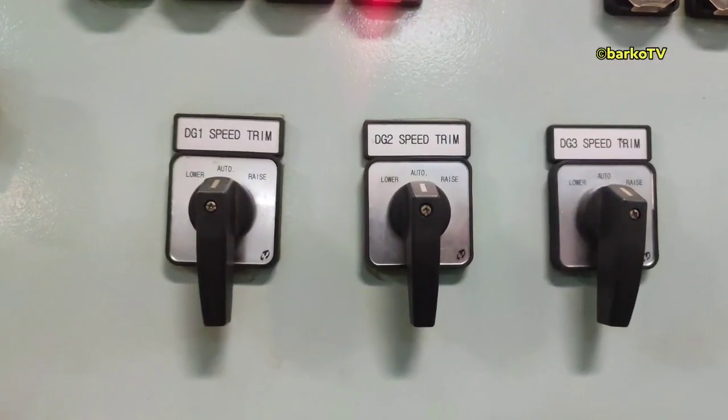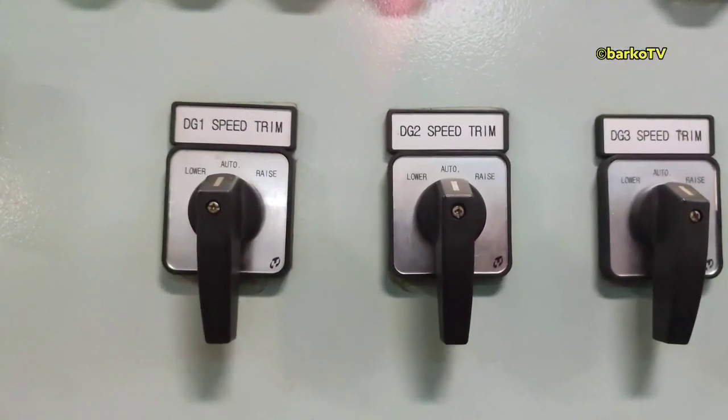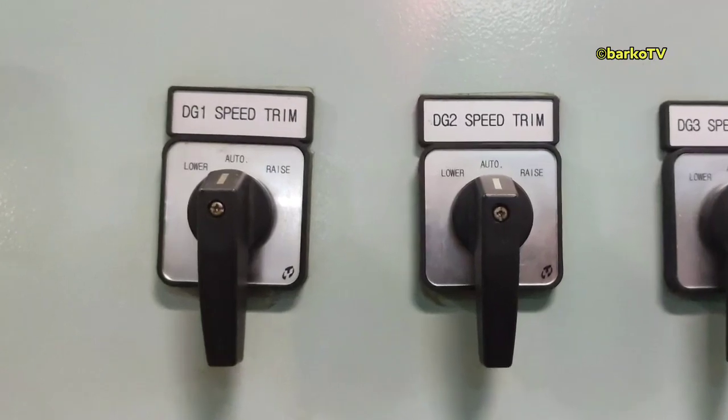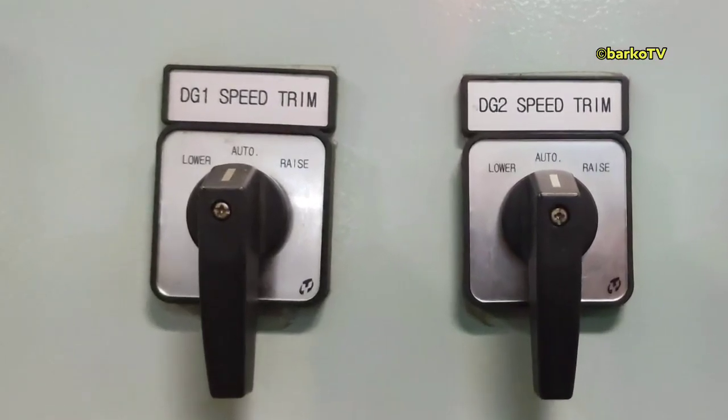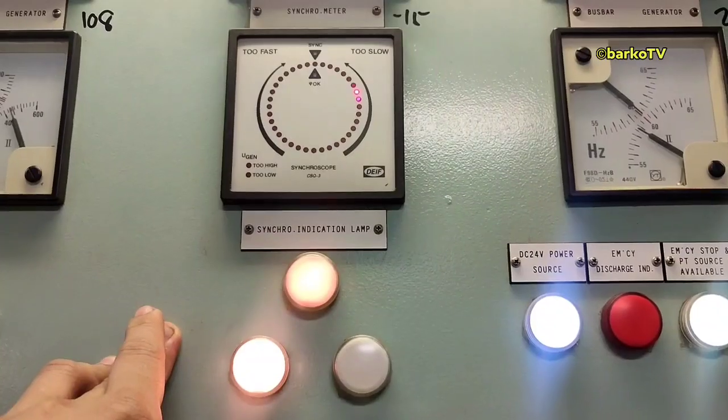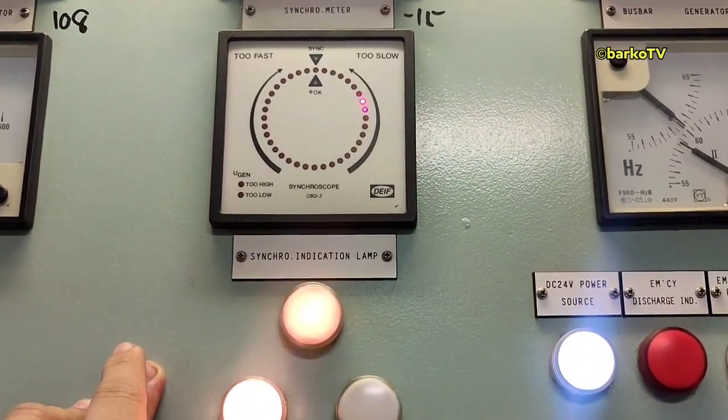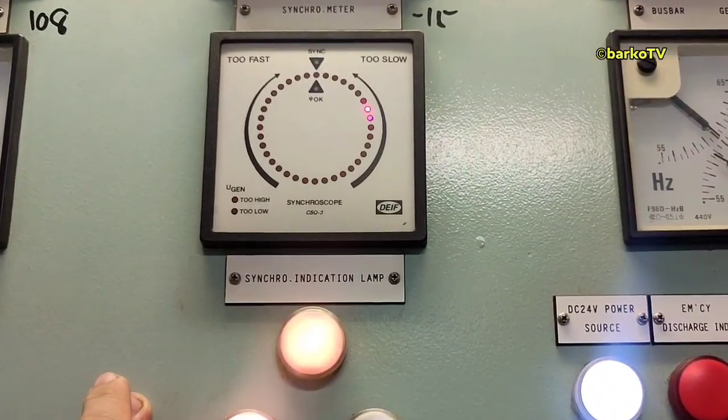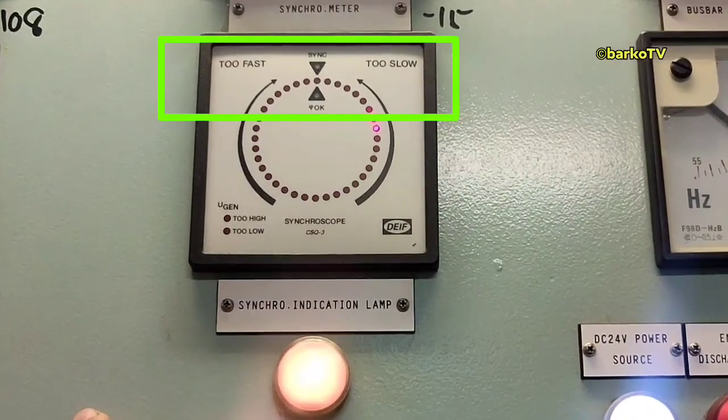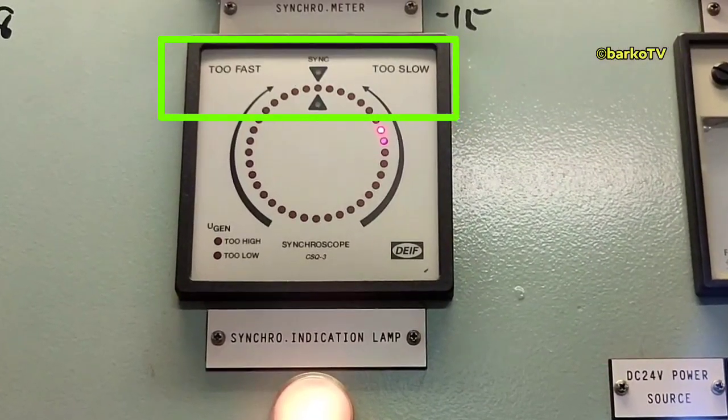Good day, this is basic tips and learnings. DG1 speed trim - what is that? And then the next topic is the synchroscope. The synchroscope has too fast and too slow indicators. What is the action for too fast and too slow? Why too fast and why too slow?